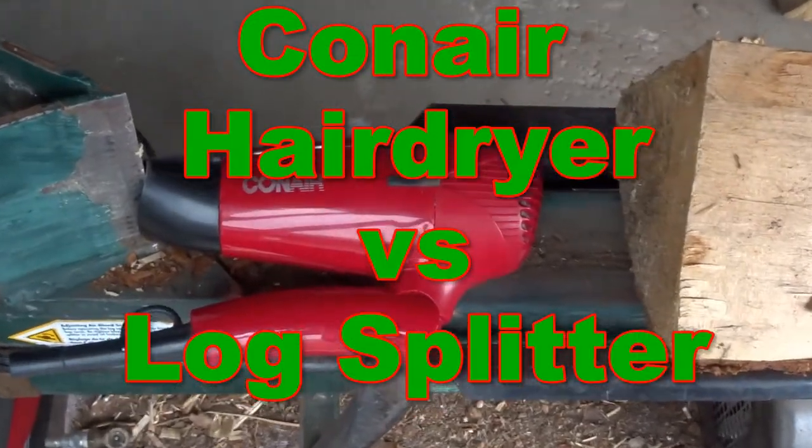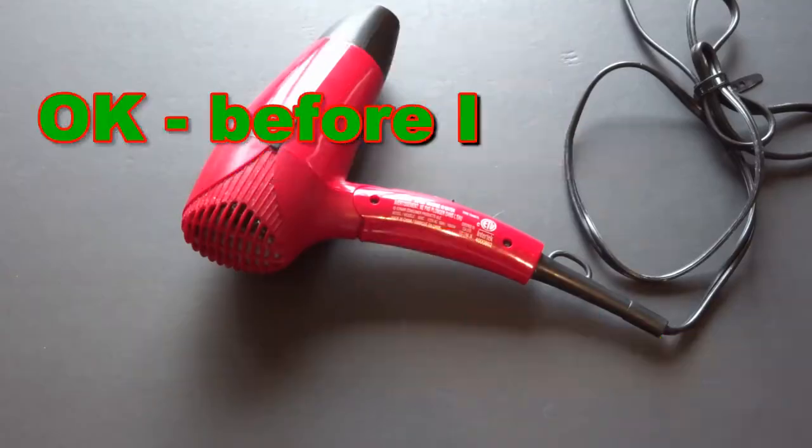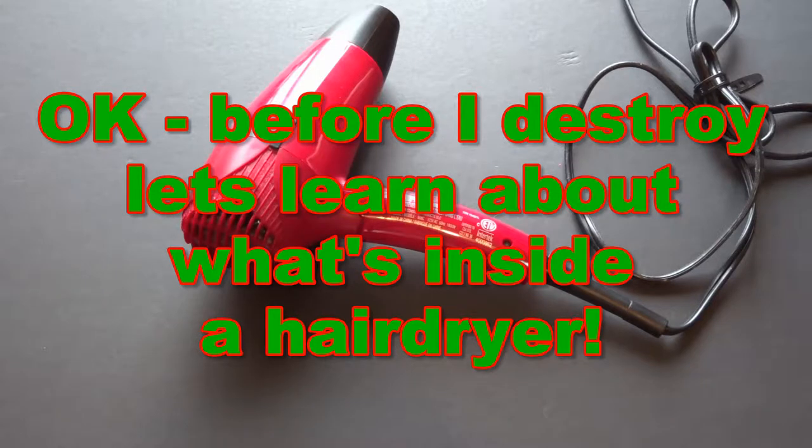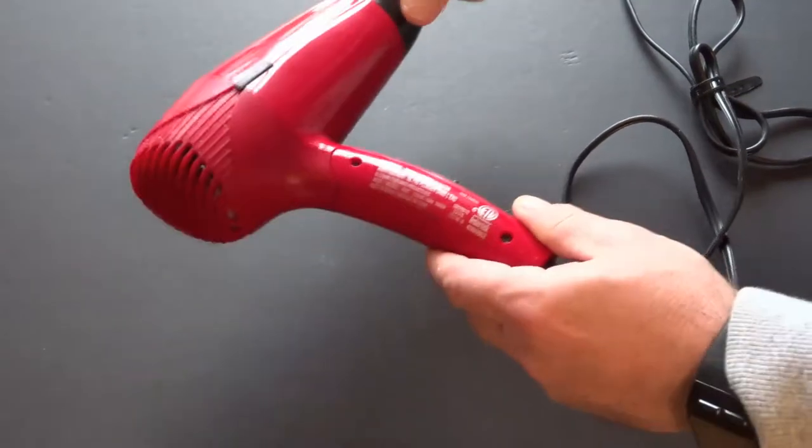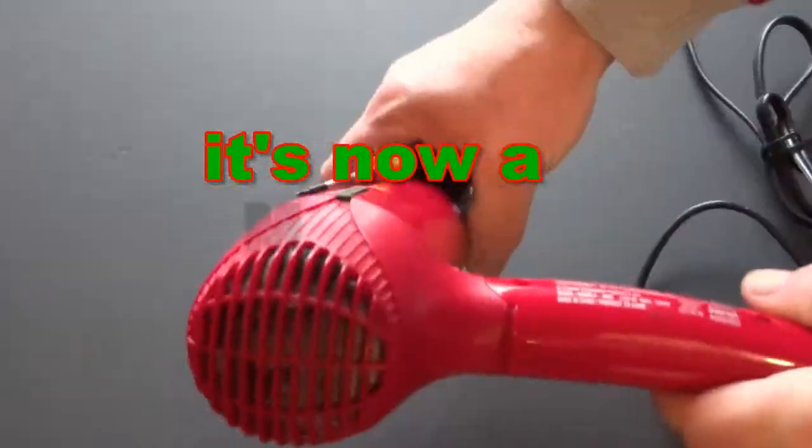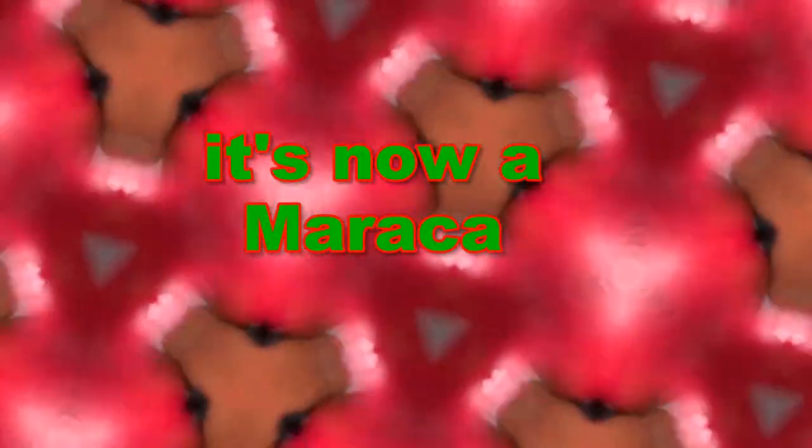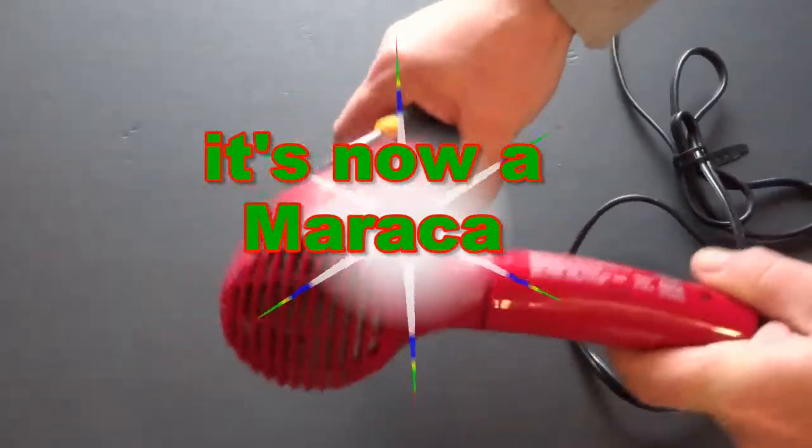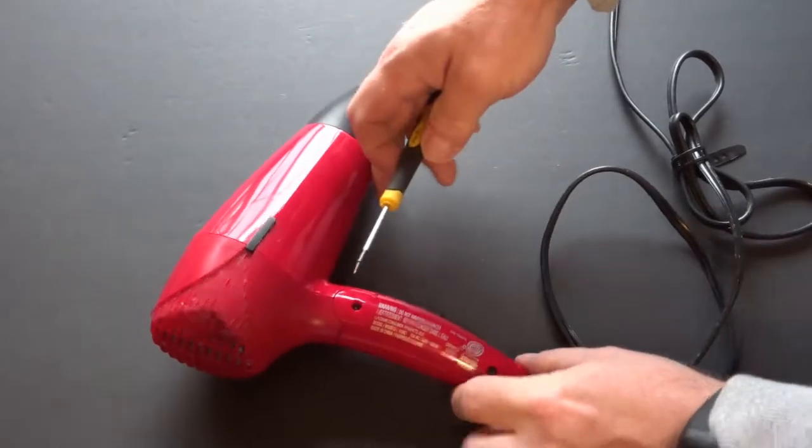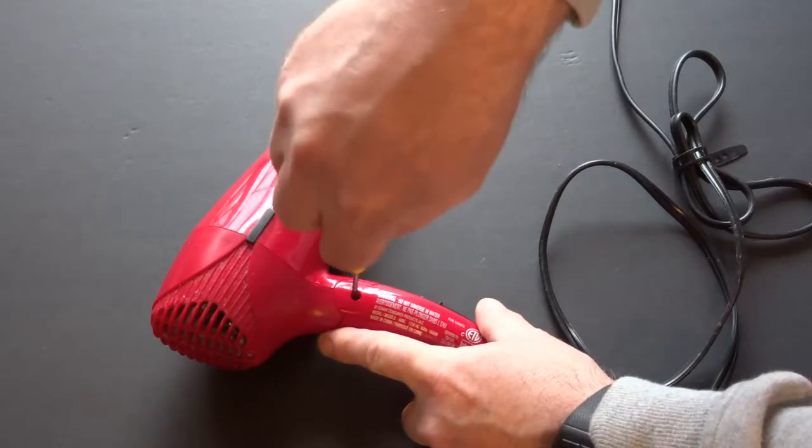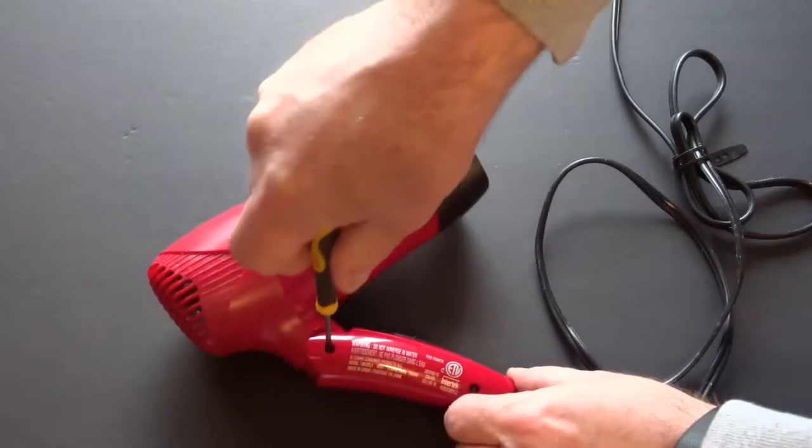Let's get zoomed in on here. So here's my Conair hairdryer and basically inside the fan blades blew up in there. Not certain why, but if you just want to see what's inside a hairdryer, I'll take this apart for you.